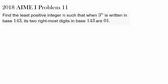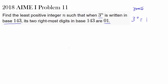Find the least positive integer n such that when 3 to the n is written in base 143, its two rightmost digits in base 143 are 0 1. Since n has to be positive, we know n equals 0 is out of the question. So we cannot argue that 3 to the 0 is congruent to 1 in any base — that's not going to be accepted because n has to be positive.